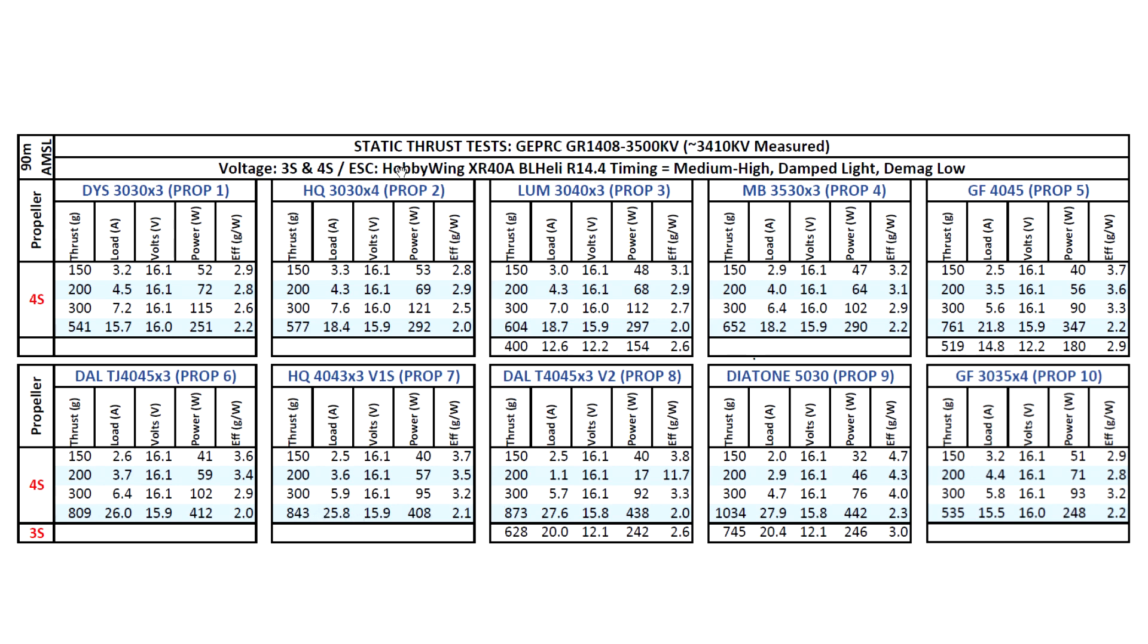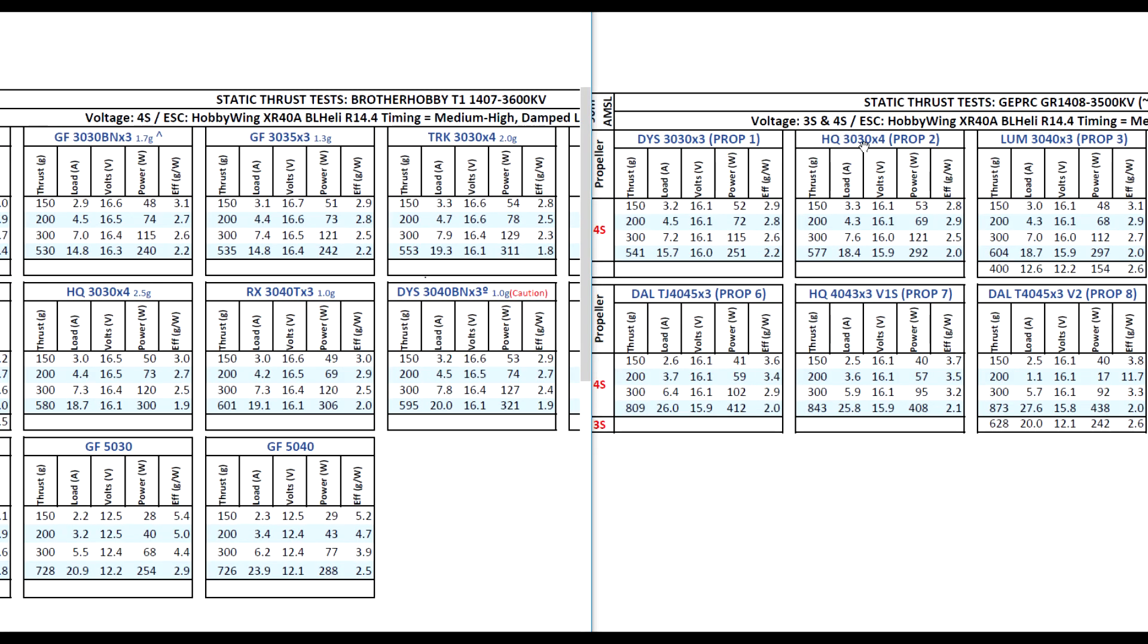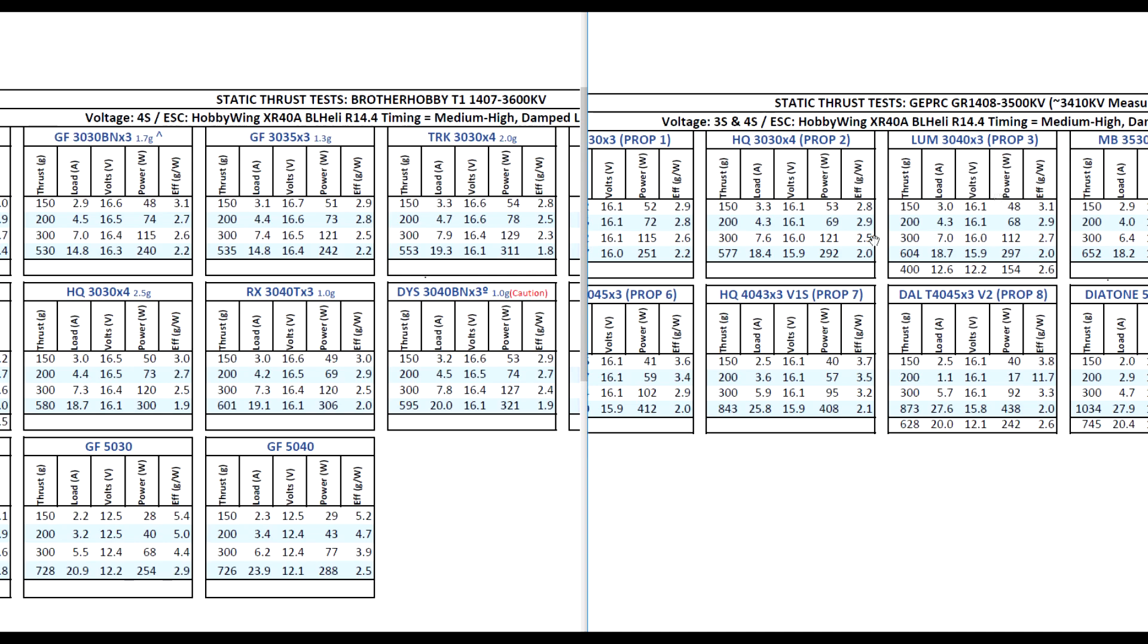We'll do a quick side by side against the Brother Hobby and see how it compares. All right, so let's have a quick look here. The Lumenier 3040x3, as you saw it's pretty much the same thrust, 600 grams basically at about the same amps. Actually that's kind of interesting - the Brother Hobby is pretty efficient too as well. So let's have a side by side against the Brother Hobby 1407 3600 KV which is actually closer to 3500 KV, so they're both pretty close in KV, although this one came in at 3400 so there's probably about 100 KV difference so keep that in mind.